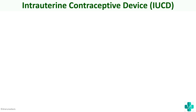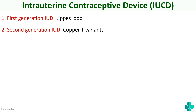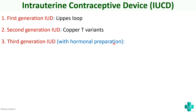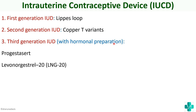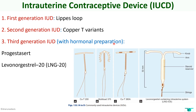There are different types of IUCDs. The first generation IUCD is called the Lippes Loop, which is not used nowadays. The second is the second generation IUCD, which includes copper T variants. The third generation contains hormonal preparations for enhanced efficiency. Examples of third generation IUDs are Progestasert as well as Levonorgestrel-20 (LNG-20). The copper variants are second generation, while the hormonal variant is third generation.